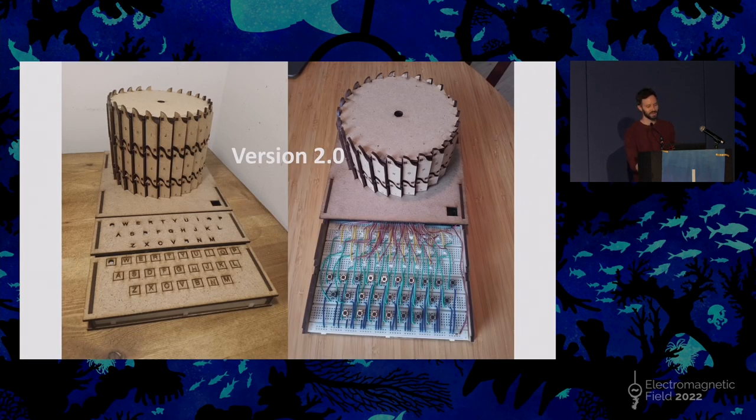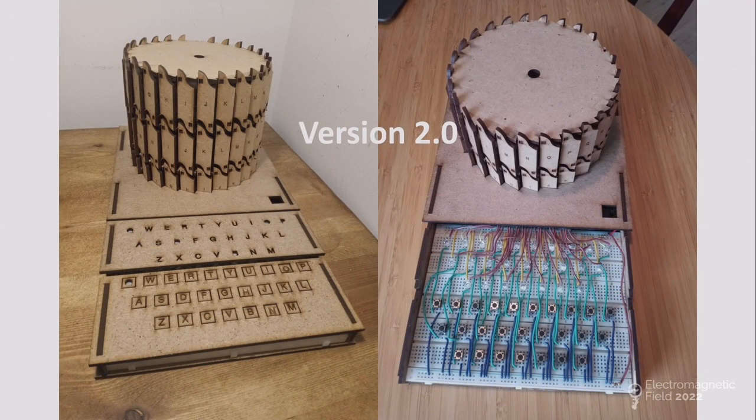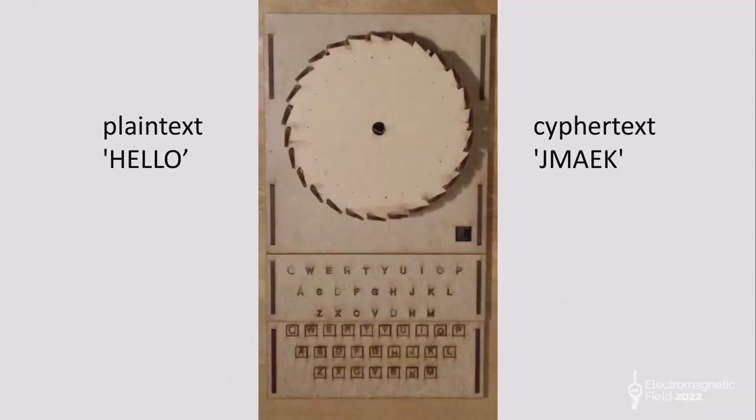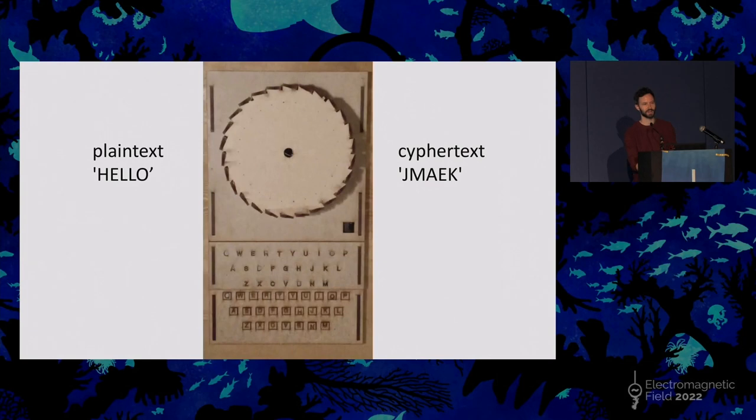That was my version two. This is the one I've got with me today. It's a lot more robust, easier to put together, and much better from that perspective. This is another video that doesn't work. But effectively what happens in this video is I type the plain text, hello, and you'll see the ciphertext. These letters in the middle light up and tell you what the ciphertext is. In this case, the ciphertext is J-M-A-E-K. You'll notice that A and E are different, even though the input letter L is the same. That's because you've rotated the rotor by one position as you type those letters.